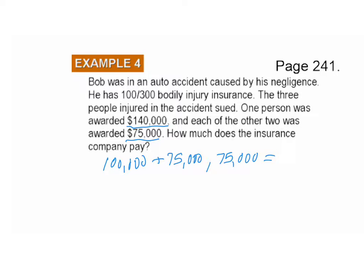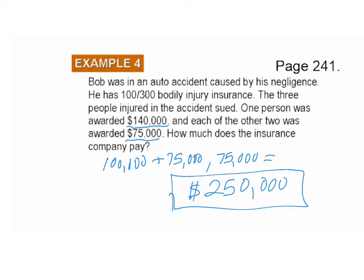That comes to $250,000 that the insurance company pays in total. Get that down and we'll proceed. Bob is responsible for the $40,000 over what the insurance company pays for the first claimant.